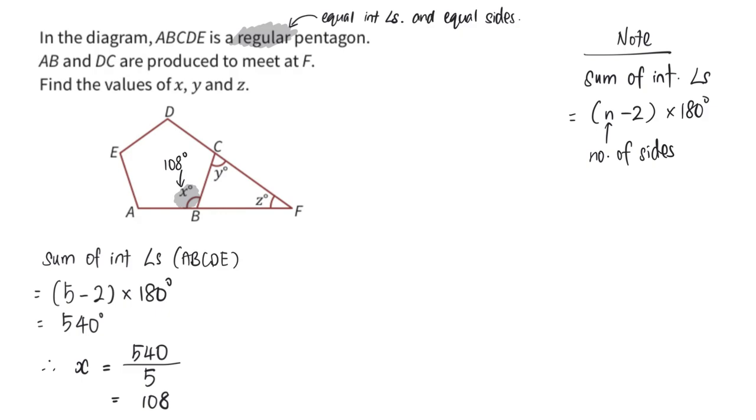Let's move on to find the value of y then. Because I saw that there is a very important word down there that says AB and DC are produced. This means that this is a straight line. This is also a straight line.